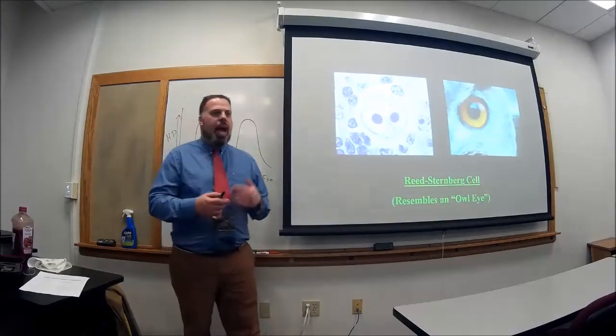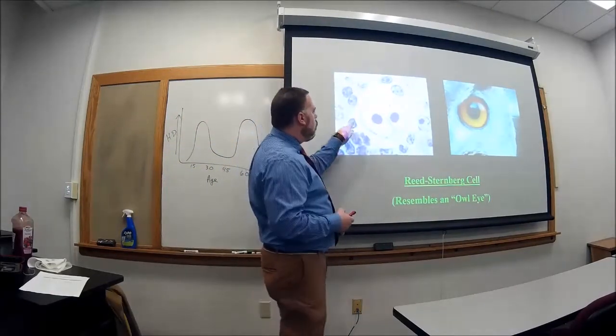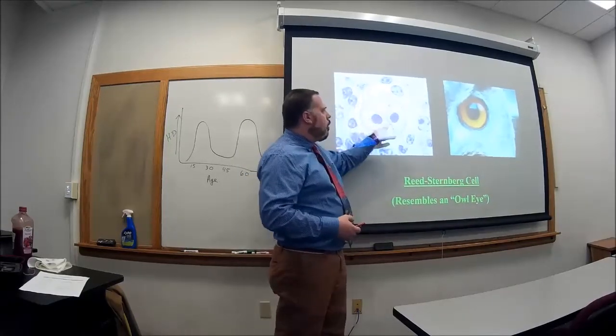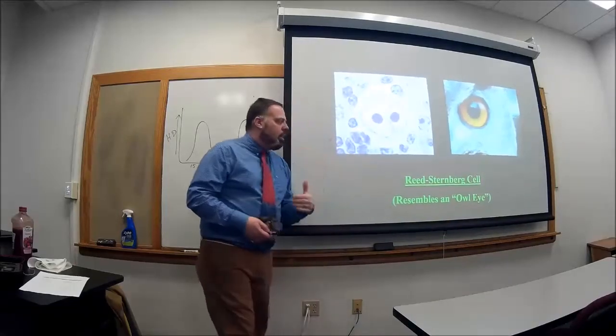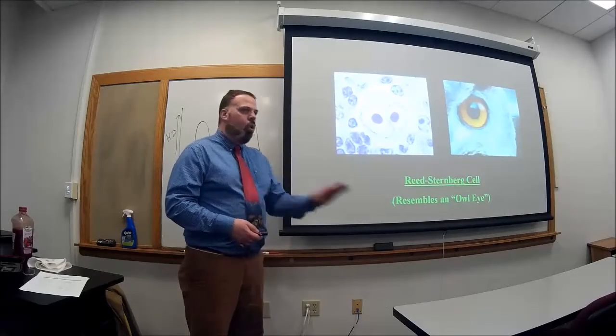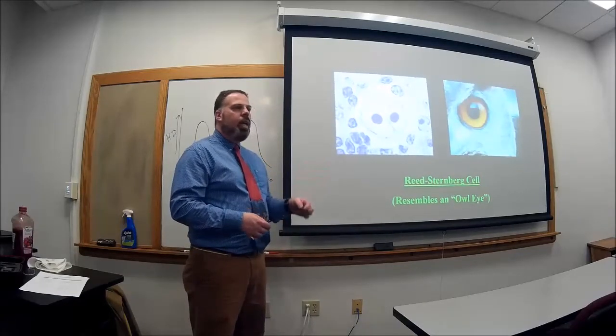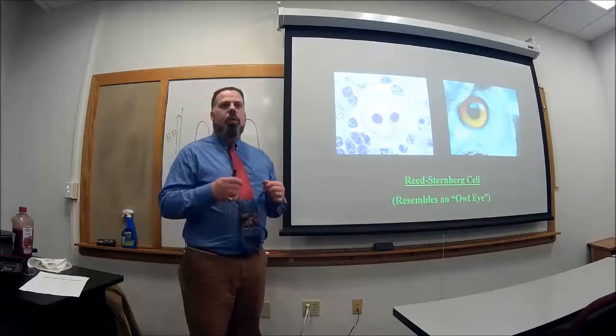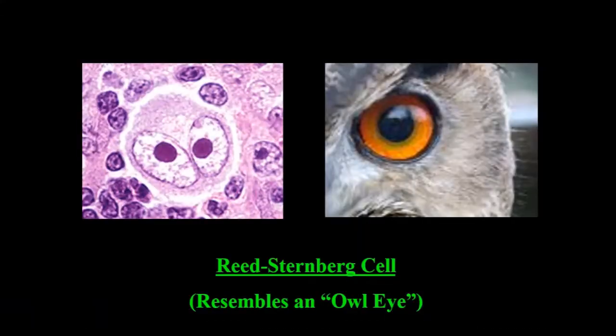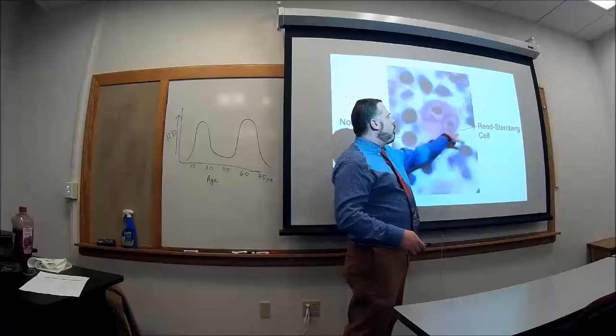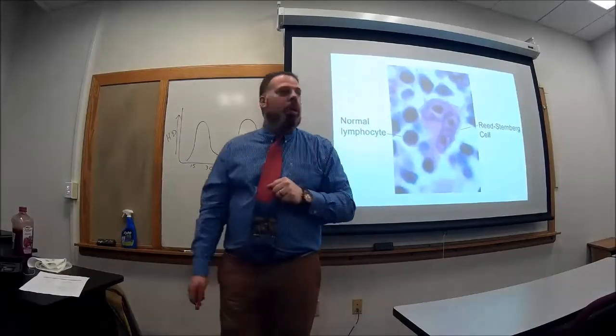So this is the Reed Sternberg cell, the abnormal B cells that happen. These are normal cells, B cells that are over here. But when you have this cell that's enlarged, it kind of looks like owl eyes. You see that over there. That's the ideal, when you see that in the biopsy of the lymph nodes, that is Hodgkin's lymphoma, no question about it. We say that the Reed Sternberg cell is pathognomonic for Hodgkin's lymphoma. It is 100% only found in Hodgkin's lymphoma. So this is just showing the same thing. Here's normal B cells, but here's those owl eyes that you're seeing over the Reed Sternberg cell.